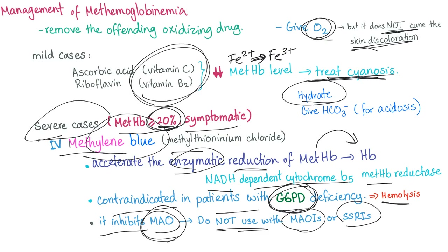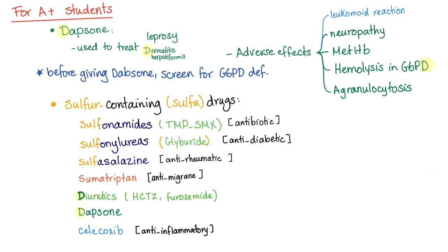IV methylene blue is contraindicated in patients with G6PD deficiency — it causes hemolysis. It inhibits monoamine oxidase, so don't use it with MAO inhibitors or SSRIs. Let me know in the comments: if you give an SSRI with a drug that inhibits MAO, what are the symptoms?